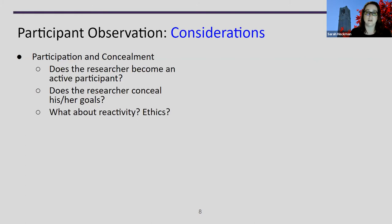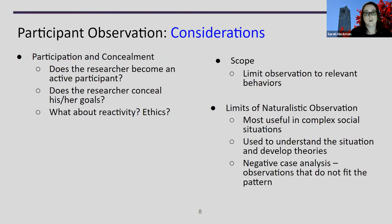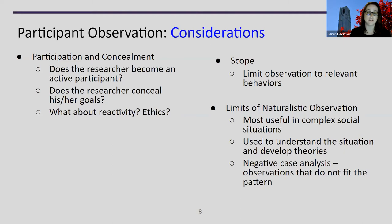You also want to think about the ethics of the observation as part of the IRB process — is this something appropriate to do? Think about the scope of the observation and limit it to the relevant behaviors that make sense for your research question; you shouldn't try to observe everything. Naturalistic observation can be very useful in complex social situations, helping us understand the situation and develop theories. It can also help with negative case analysis, where observations that don't fit the pattern may lead to new or diverging theories.